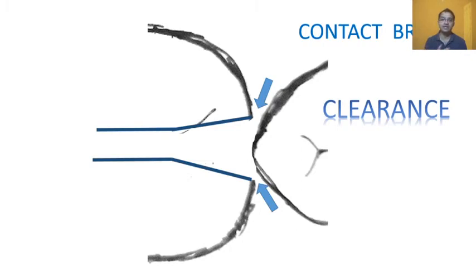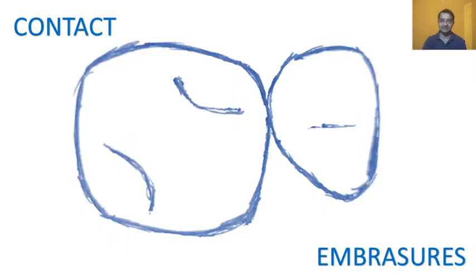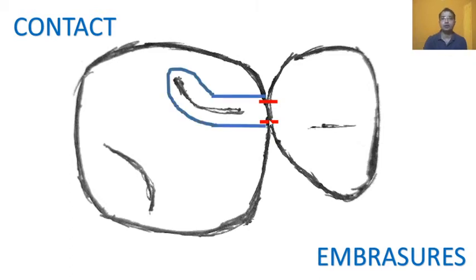There are situations where you may not break the contact, which will be covered in a class 2 cavity preparation video. Now coming to today's important topic — the reverse S curve. We will understand it in the maxillary teeth because it is found mostly in the maxillary molar, and more commonly in the first molar, because of the peculiar buccally-situated contact as mentioned earlier.